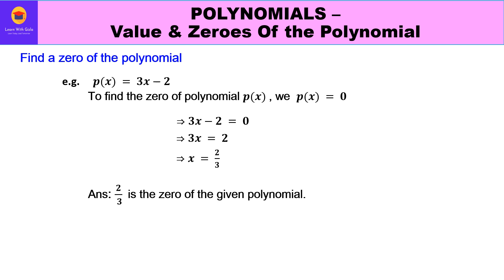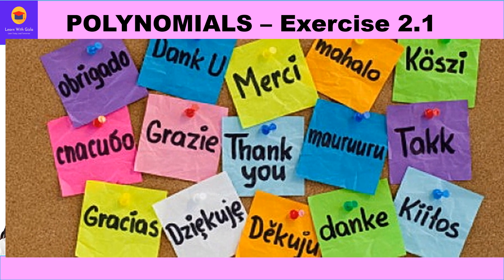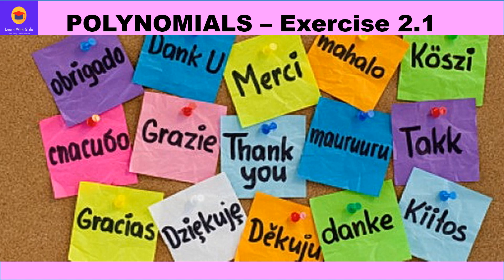Let us consider an example: find the zero of p(x) = 3x − 2. Set 3x − 2 = 0, so 3x = 2, therefore x = 2/3. So 2/3 is the zero of the given polynomial. We just equate the polynomial to 0 and find the value of x — whatever value of x we get is the zero of the given polynomial. Hope you have understood both the concepts of value of a polynomial and zeros of the polynomial. In the next video we are going to take up questions related to it. Thank you everyone, have a great day ahead.